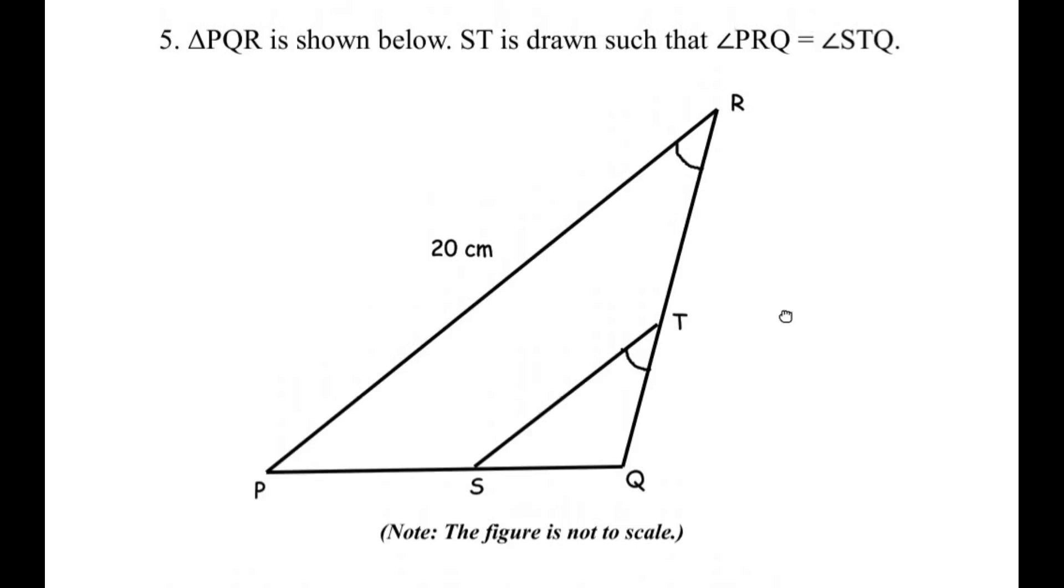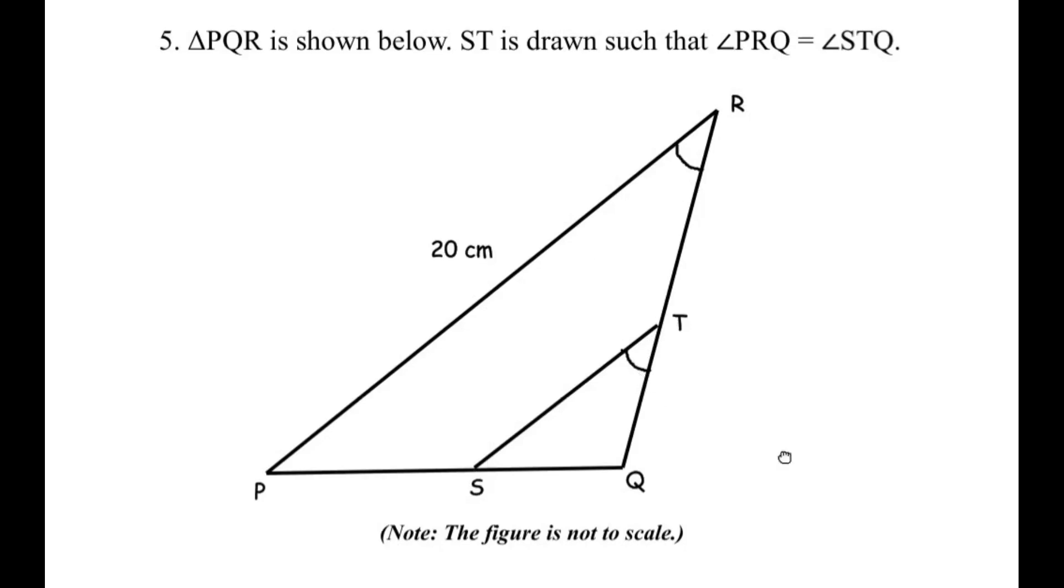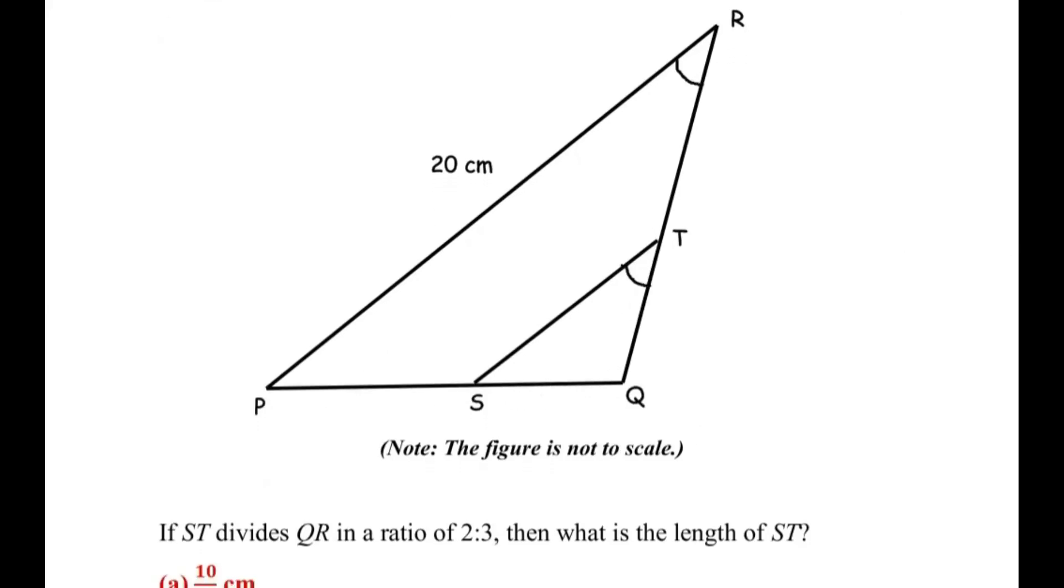Now let us understand the question given over here. We have been given a triangle PQR and the line ST is drawn such that the angle PRQ is equal to the angle STQ. So you can see that they have marked angle R is equal to angle T. Now below it is given that this line ST divides the line QR in the ratio 2 is to 3. This is the ratio, not the length. So let us take this smaller part QT as 2X and TR as 3X. So the ratio is 2 is to 3. Now we have to find out what is the length of ST.